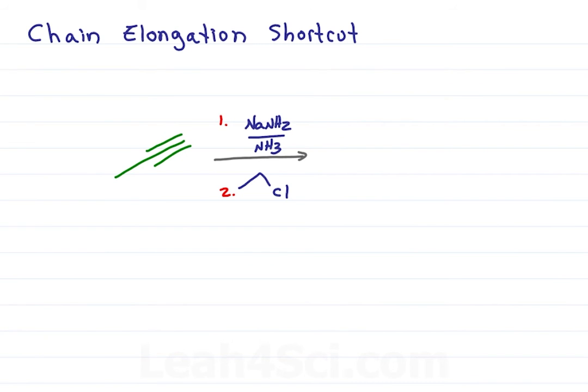If you're only asked for the product, don't waste your time drawing a mechanism. Instead, apply this shortcut. Step one, I know NH2 will deprotonate at this position, and so I redraw the starting molecule with a new bond at the terminal alkyne. My incoming nucleophile will attach at the leaving group position. That's this carbon, one and two, and so we attach them, one, two.